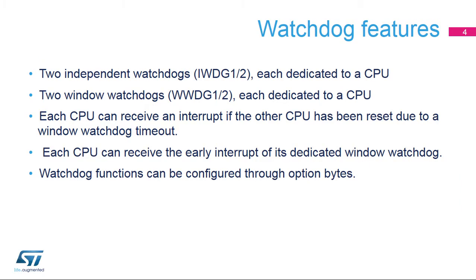The embedded watchdog blocks feature two independent watchdogs, IWDG1 and 2, and two window watchdogs, WWDG1 and 2, each dedicated to a CPU. Each CPU can receive an interrupt if the other CPU has been reset due to a window watchdog timeout, and each CPU can receive the early interrupt of its dedicated window watchdog.